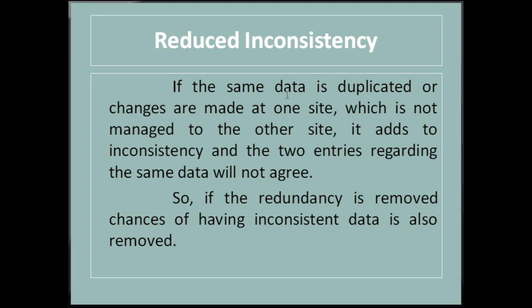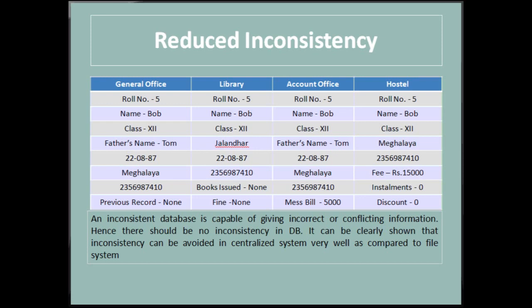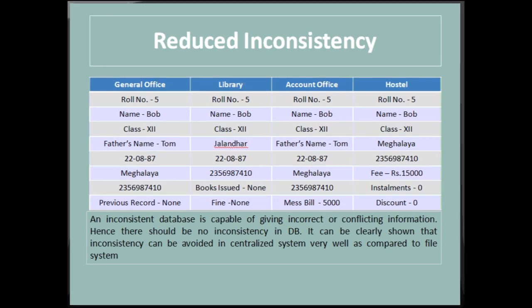Consider the school system: in the general office file, roll number 5 is listed as living in Meghalaya, but in the library, roll number 5 is listed as living in Jalandhar. These two entries of the same object do not agree with each other — one is updated and the other is not. At such a time, the database is said to be inconsistent.